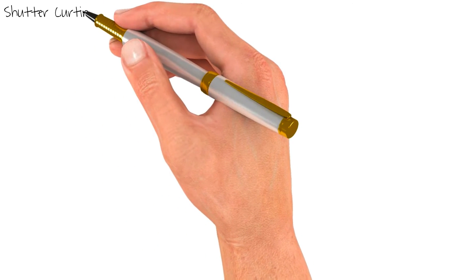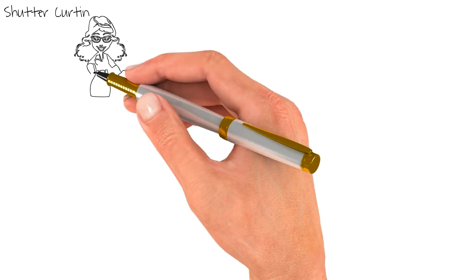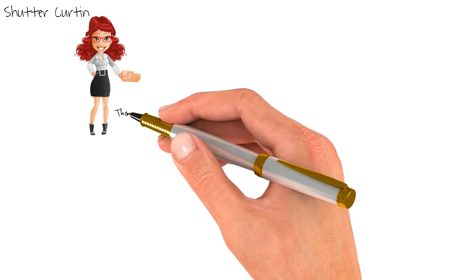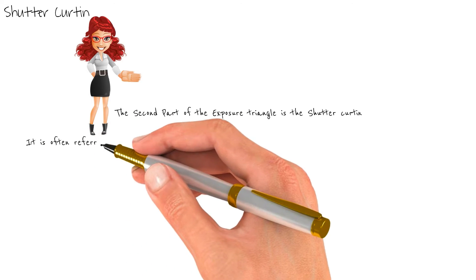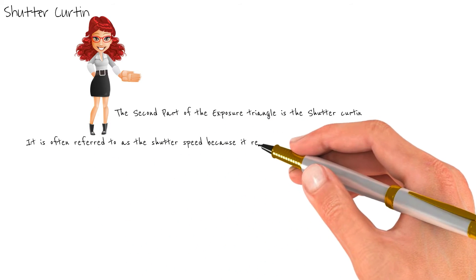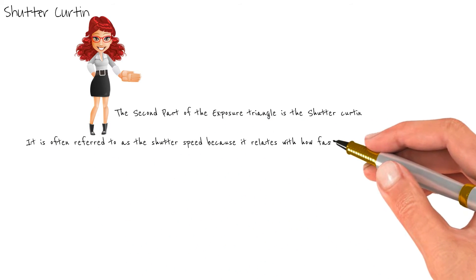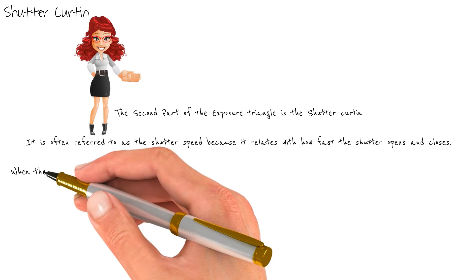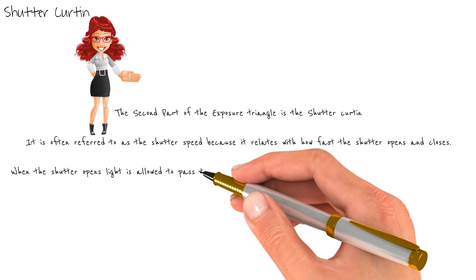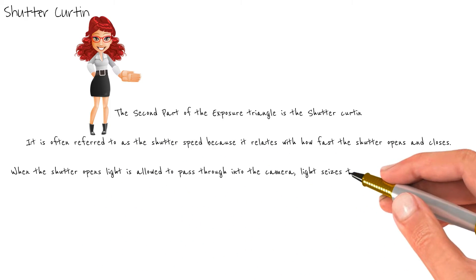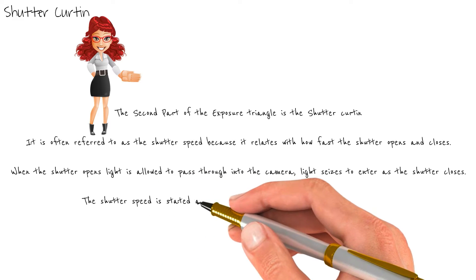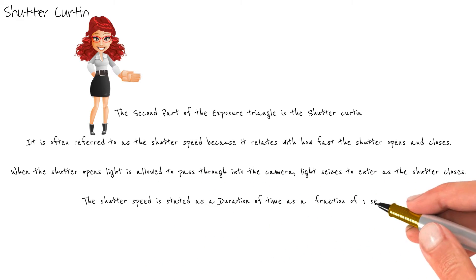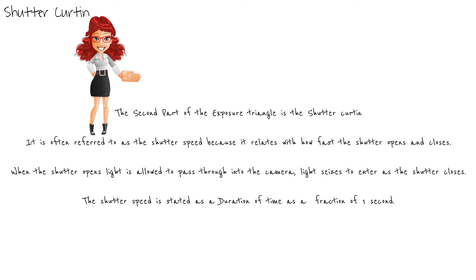The second part of the exposure triangle is the shutter curtain, often referred to as shutter speed because it relates to how fast the shutter opens and closes. When the shutter opens, light is allowed to pass through into the camera. Light ceases to enter as the shutter closes. The shutter speed is stated as a duration of time as a fraction of one second.